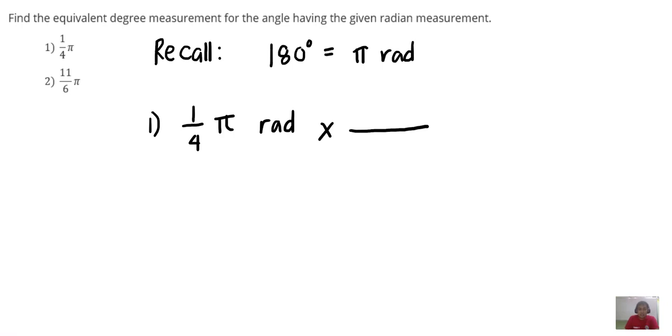Since we are given radian, the radian should be at the denominator, so pi should be at the denominator pi radian, and then the 180 degrees should be at the numerator. So that we can cancel radian to radian. So what is left is the degree measurement of the angle.